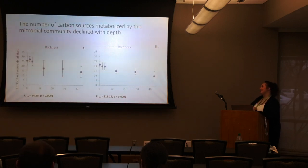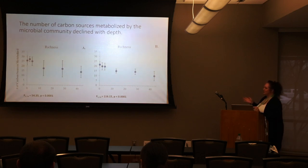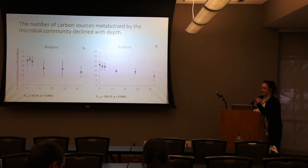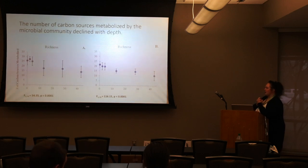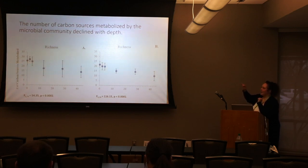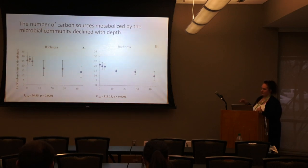When looking at richness — how many carbon sources these soil communities were able to use — we saw a consistent trend with depth. At shallower depths in both fall and spring, more carbon sources could be metabolized by the community than deeper in the soil profile. On average in the fall, 80% of the 31 carbon sources were metabolized at the soil surface, declining to about half at 43 centimeters. In the spring, 74% were metabolized at the surface, declining to about 30% at our deepest sampling depth.